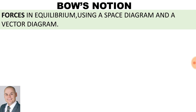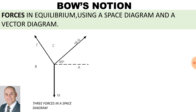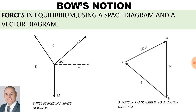Bow's notation: forces in equilibrium using a space diagram and a vector diagram. We have three forces in a space diagram. Starting in a clockwise direction we label space A, space B, and space C. As we move from space A to space B, space B to space C, and space C back to space A, we are able to draw our diagram. The three forces are transferred to a vector diagram, moving from space A to space B, to space C, and then back to space A.